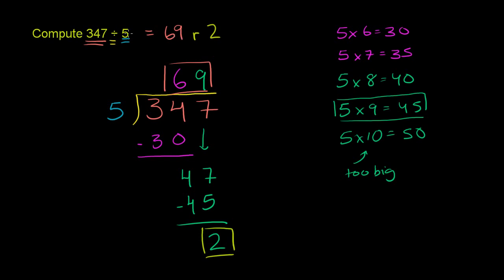Or another way to think about it is 5 times 69 is 345. So you're always going to have 2 left over in this circumstance. So that is our answer.